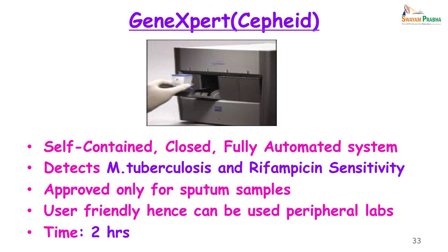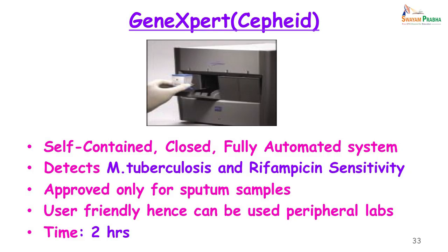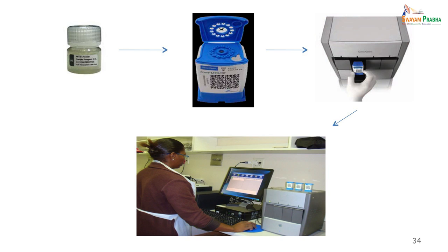Results are available within 2 hours and minimal training is required — just a good electrical supply. For the GeneXpert test, you take the sputum sample and mix it with a provided liquid reagent. About 2 milliliters of that mixture is transferred into a cartridge, which is then placed in the machine. After 2 hours you get a graph showing whether Mycobacterium tuberculosis is present or absent, in high, medium, or low amounts, and whether the strain is susceptible or resistant to rifampicin.